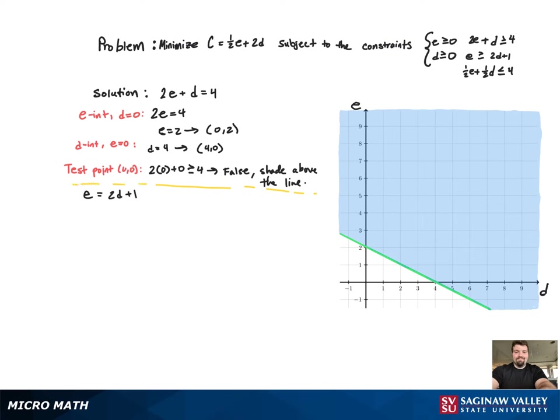And now we can move on to the next inequality. Again, switch it to an equation, graph the line. We're going to find two points, the e and d intercept again.